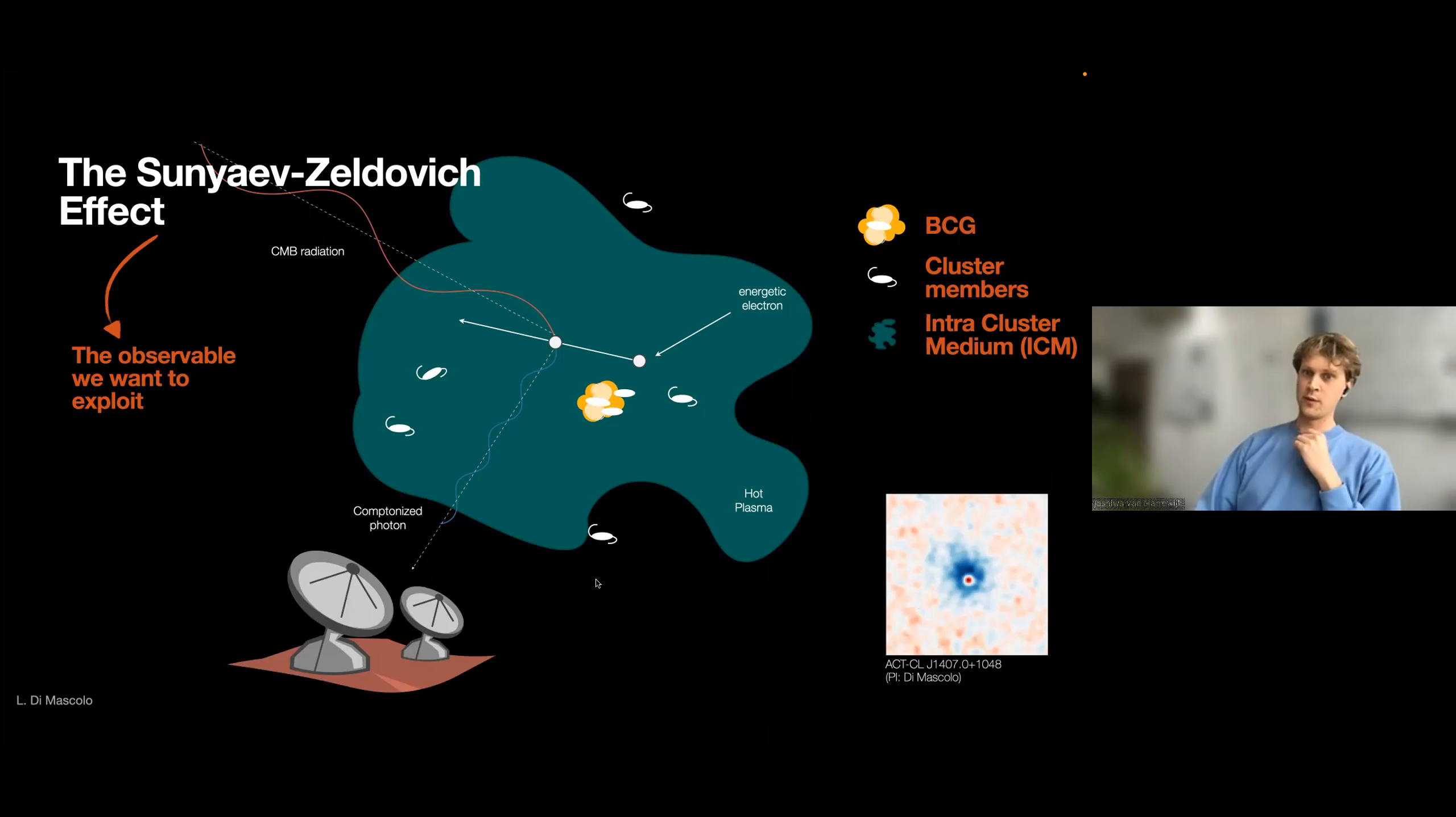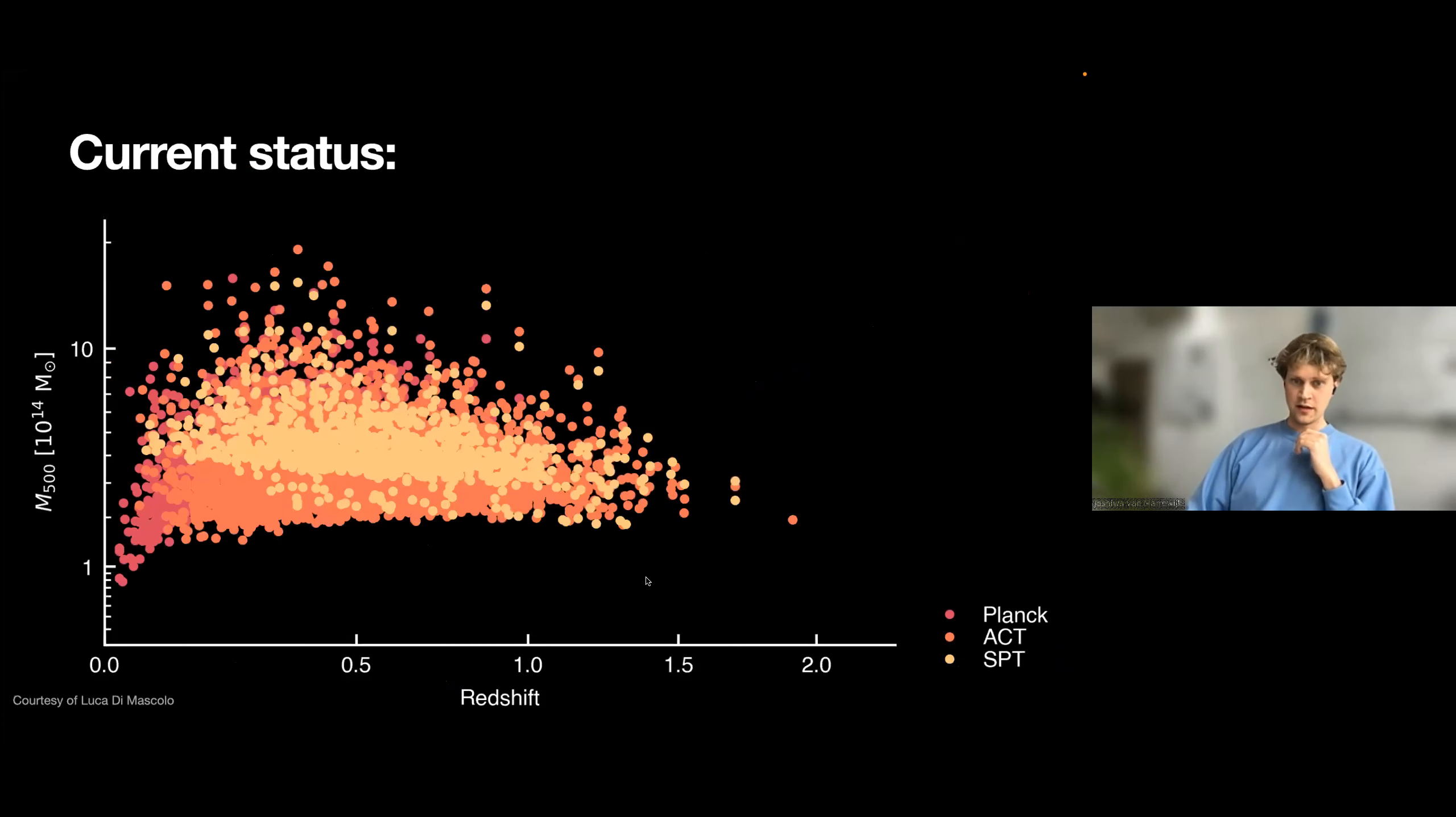That's the observable we want to exploit. And single-dish telescopes have already exploited this observable for a decade and found thousands and thousands of clusters. Here is, for instance, an overview of their catalog. The y-axis shows the cluster mass, and on the x-axis, the redshift. These are the two most fundamental parameters to do cosmology with these clusters.